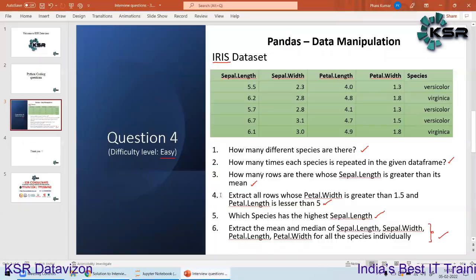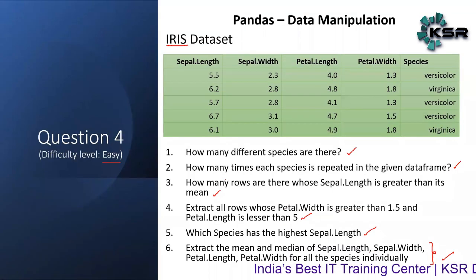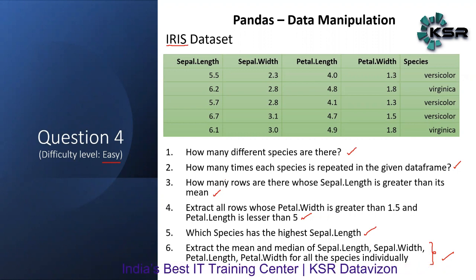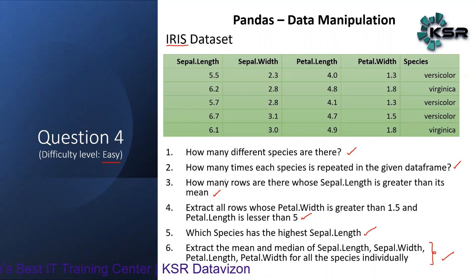These questions used the Iris dataset, but interviewers may use a different dataset — like a GDP dataset of all countries. They might ask which country has the highest GDP, which is similar to finding which species has the highest sepal length, or extract all countries whose GDP is greater than a certain value, or extract the GDP of India.